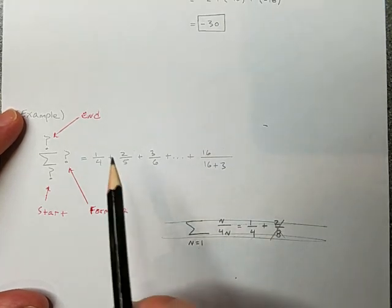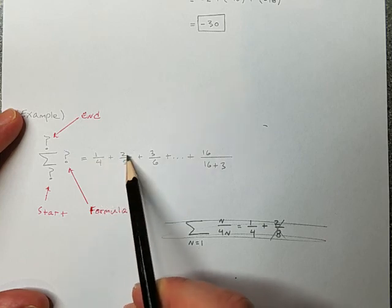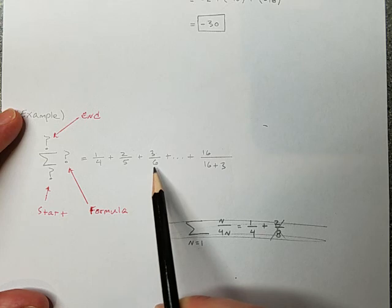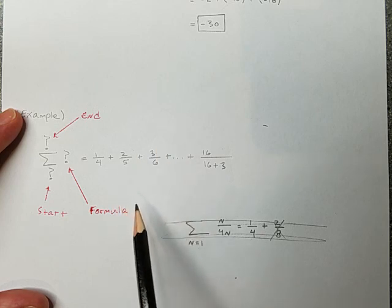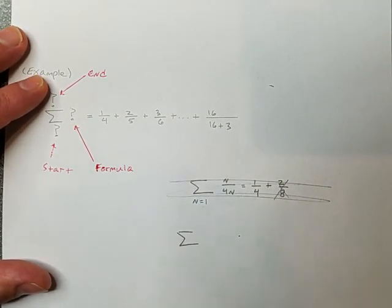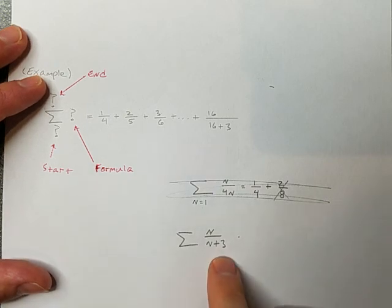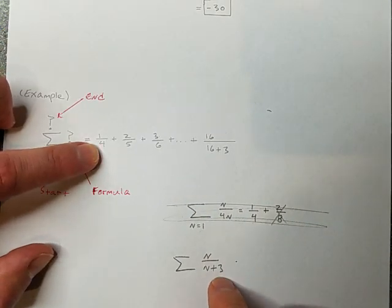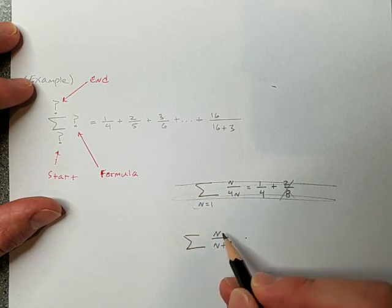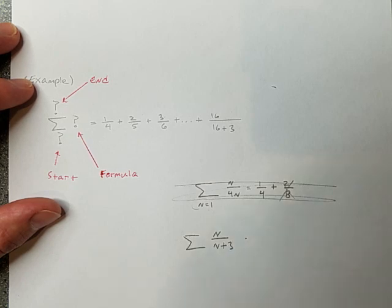So let's try to notice something else about this. I noticed, if in these fractions, the top number, 1, goes to 2 and then 3. And then the bottom number, 4, goes to 5 and then 6. So maybe I should try to create the formula based on that. Let's do this. Let's say n over n plus 3. Here's why I wanted to do that. That number on the bottom is 3 more than the number on the top. Plus, as I continue to count upwards, this number will advance by 1 every time. And so will this one.